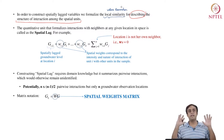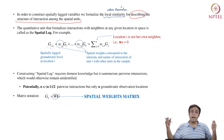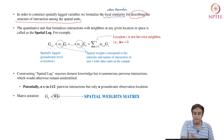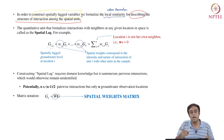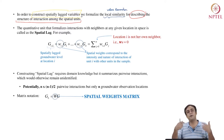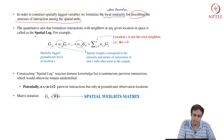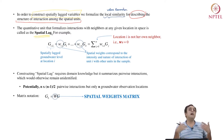When we construct these spatially lagged variables, we are following up on ideas we have developed thus far and now formalizing them. The quantitative unit that formalizes interaction with neighbors at any given location in space is called the spatial lag — very important. It is an entity which formalizes interactions with neighbors for any given location in space.